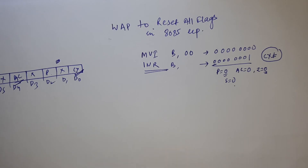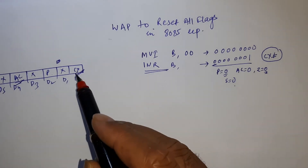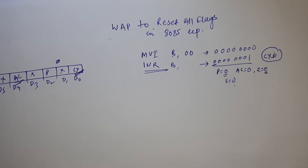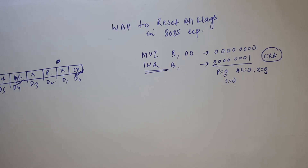Now what we have to do is reset the carry flag. In the 8085 microprocessor, we have no direct instruction to reset the carry flag, so we have to reset it separately. In the 8085, we have two instructions — one for setting the carry flag, and one for getting the complement of the carry flag.